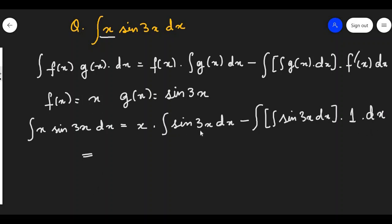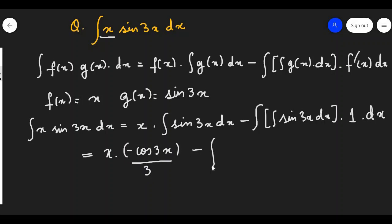Here you have to integrate sin3x. If you do not know how to integrate this, you have to go and check out the videos on integration by substitution. We put 3x as y and integrate. So, integration of sin3x will be minus cos3x upon 3. The inner integration of sin3x dx is minus cos3x upon 3.